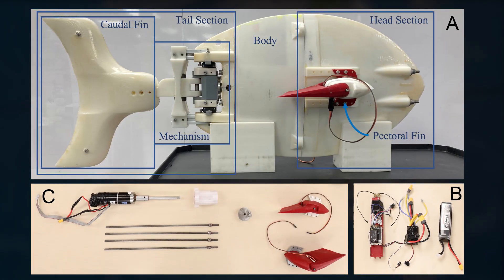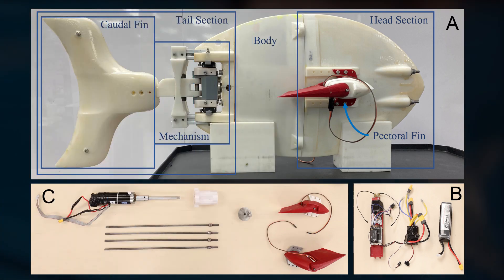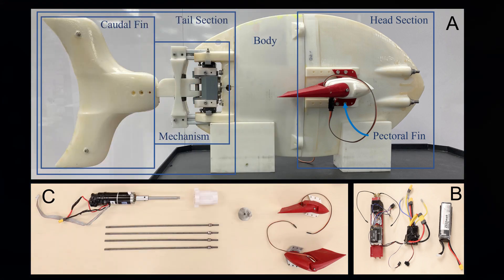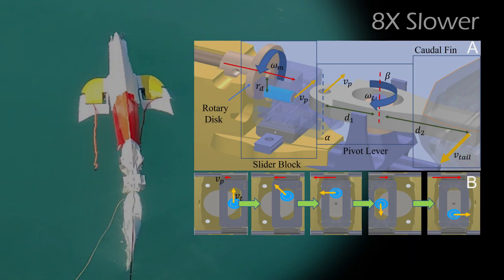Snap is designed with a narrow-width body to reduce water drag, and a large flexible fin powering its strokes. The entire system is packaged in this compact design, allowing for an untethered swim in the open ocean.